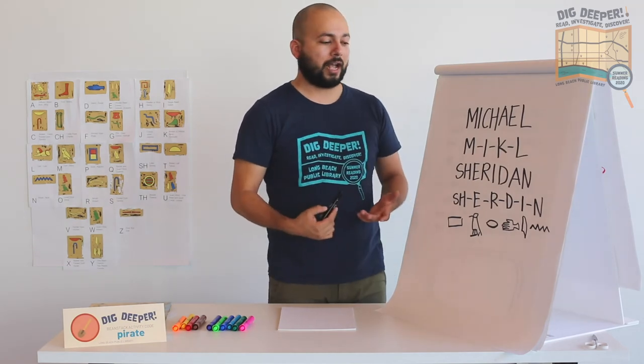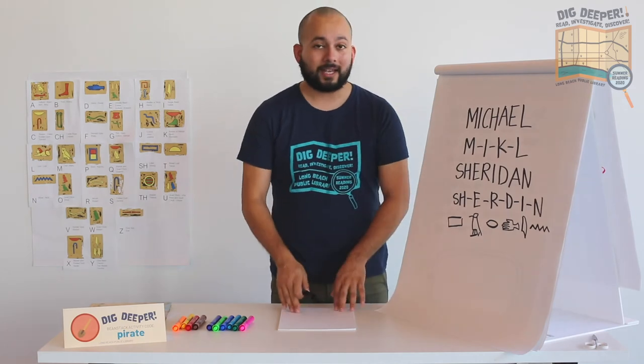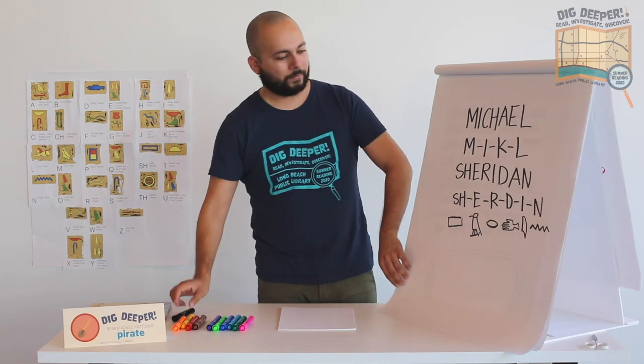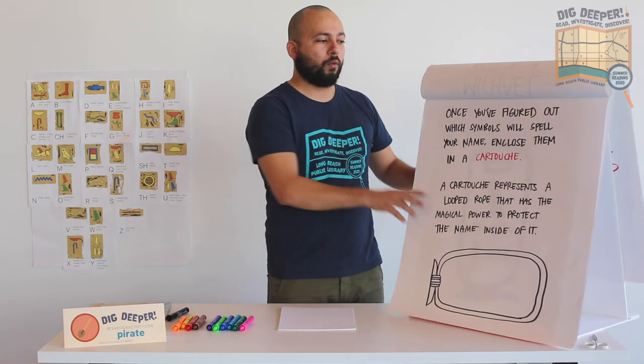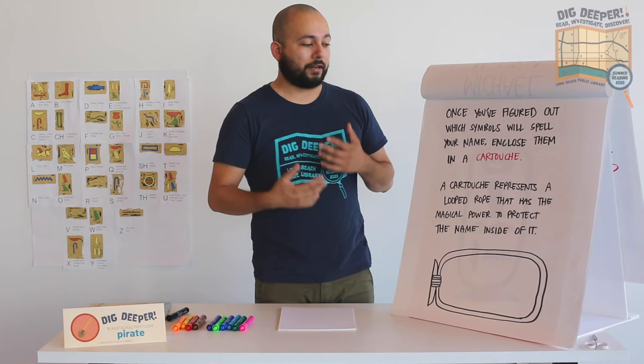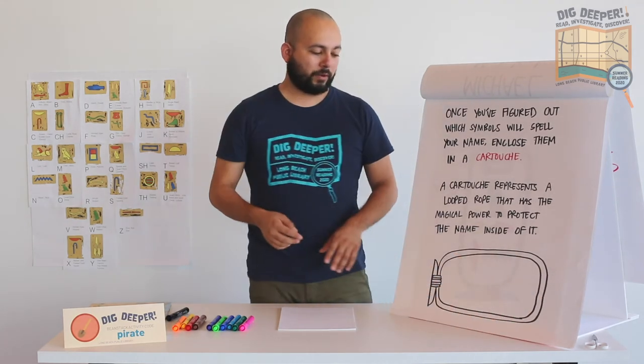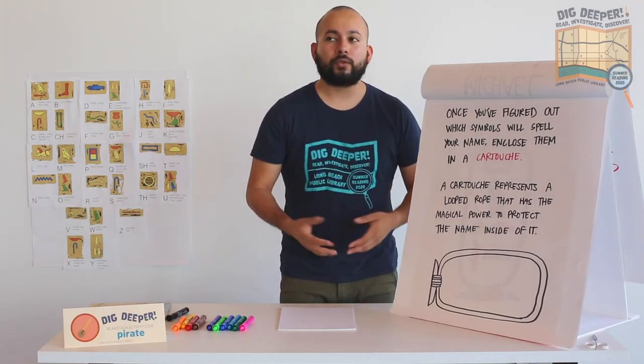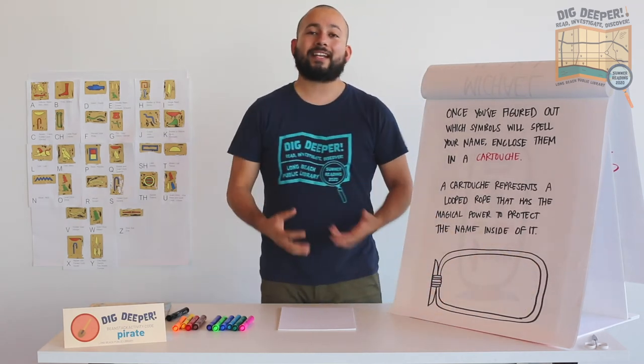Obviously right now it's a very rough kind of draft, but now that you know which symbols you need, now you can really take the time to actually draw them out and color them in and get really artistic with them. So once you've figured out which symbols will actually spell your name, you want to enclose them in a cartouche. And a cartouche represents a looped rope, as you can see, that has the magical power to protect the name inside of it. So the ancient Egyptians oftentimes would put the names of their pharaohs or their priests or their gods inside of cartouches because they were magical protection.